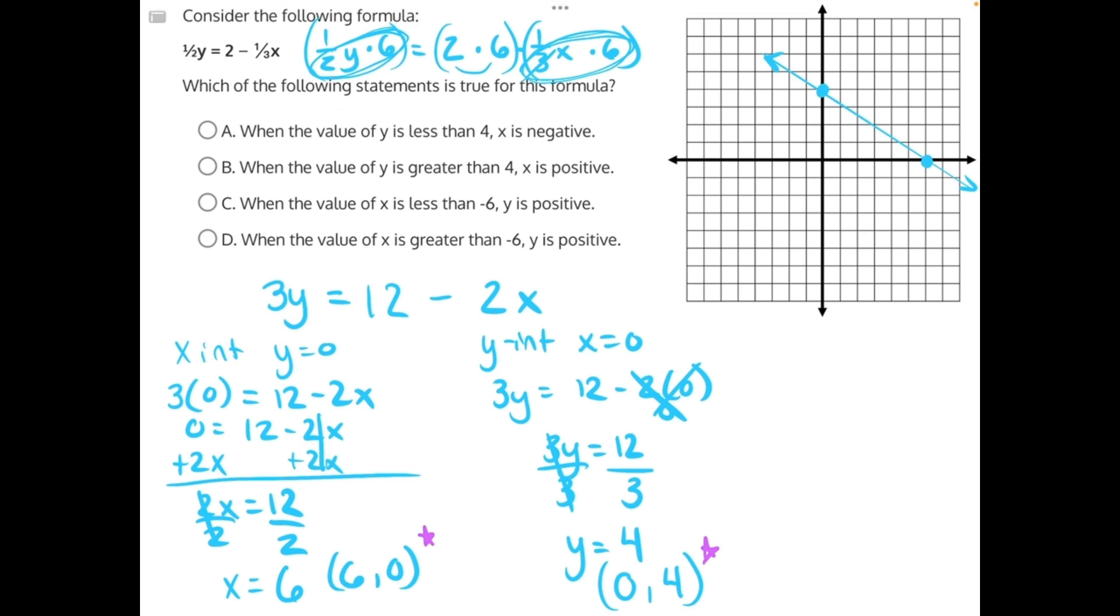Now let's take a look at our answer choices. A says when the value of y is less than 4, so less than would be all of the values that are underneath this line, x is negative. Well, that is not true because all of the values that are underneath this line have positive x values because they're all on the right-hand side of the y-axis. So A is incorrect.